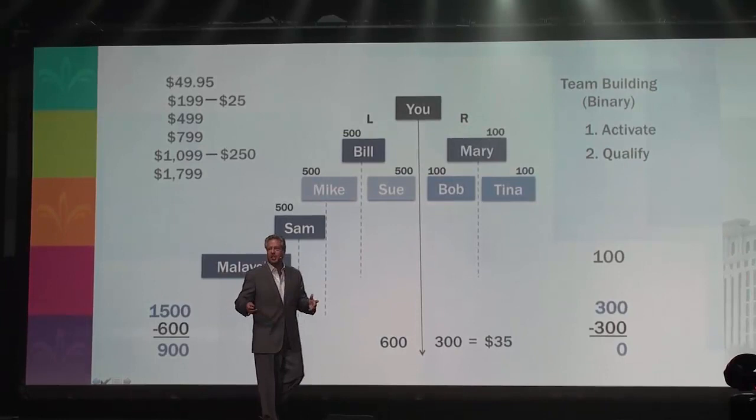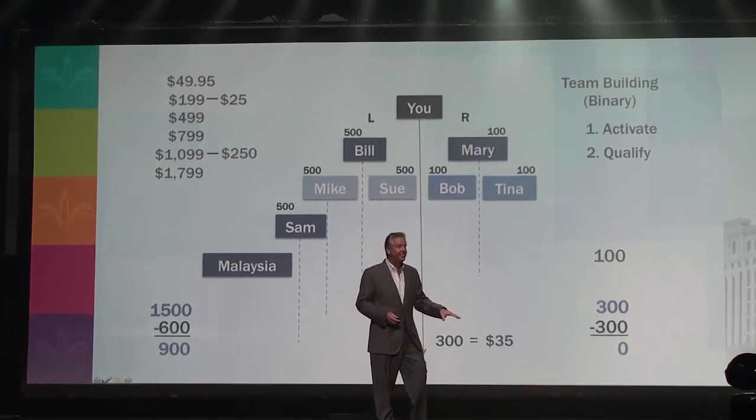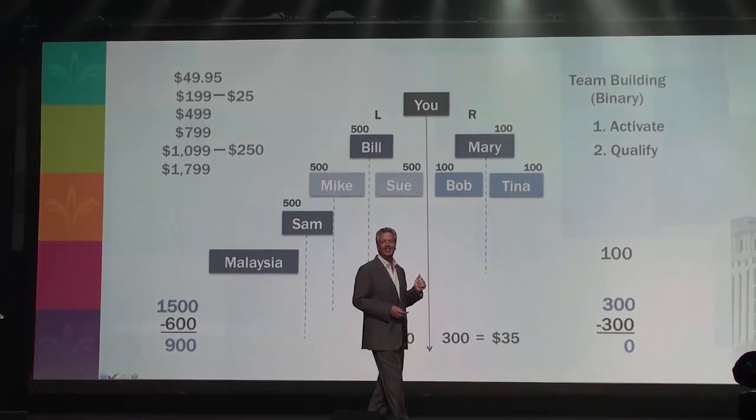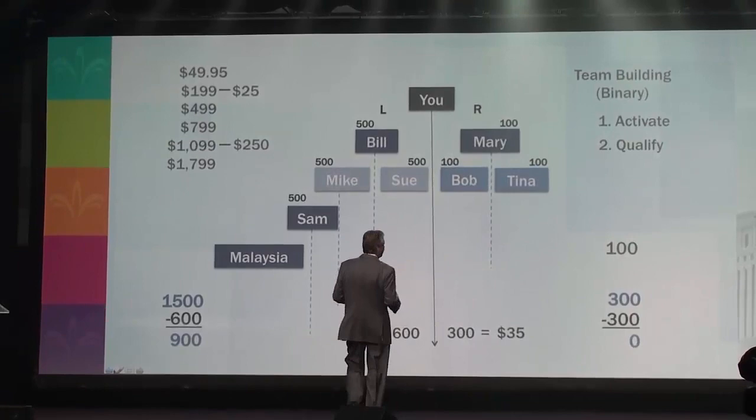So if that happens to you, what would you do? Build your right team. For every 300 points your right team generates, you get $35, $35, $35 — around the clock. That's what happens here.